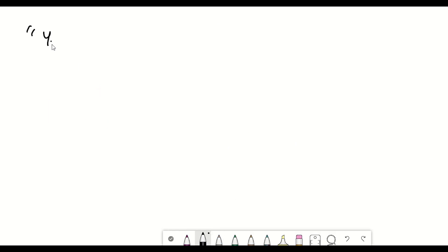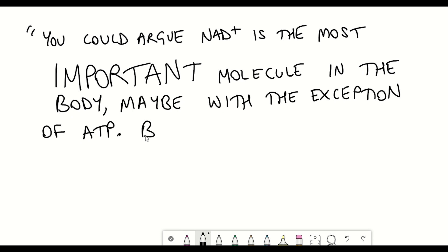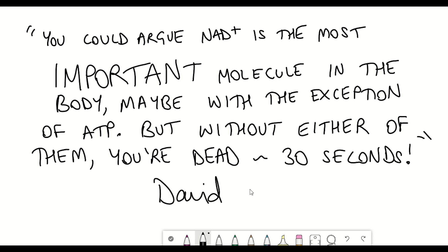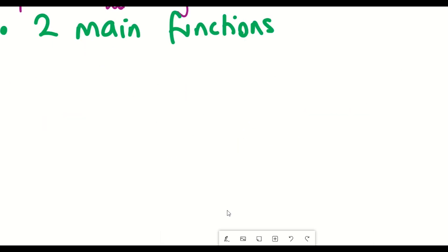In fact, to quote David Sinclair: you could argue NAD plus is the most important molecule in the body, maybe with the exception of ATP, but without either of them you're dead within 30 seconds. That's because NAD plus is required for around 500 different enzymatic reactions and its two major functions can be split into two.